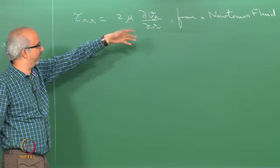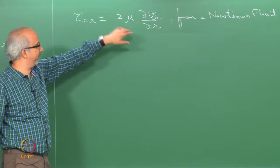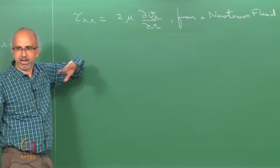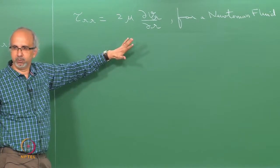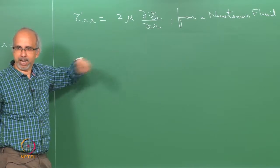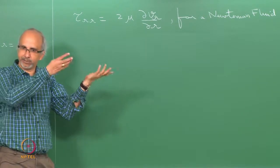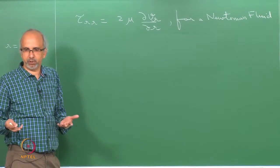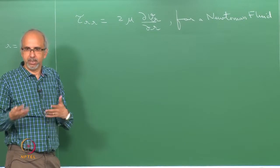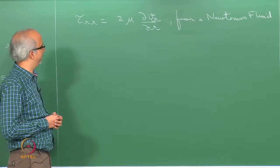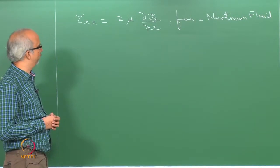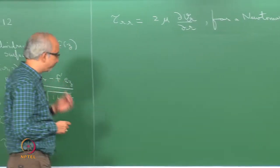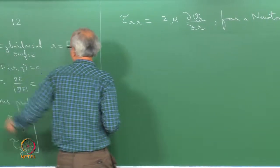If you have a different rheological property, this particular relationship will change. The idea is that everything is now in terms of velocity — the differential equation has velocity, the boundary condition will also be in the form of velocity, so everything is consistent. Now I want to evaluate n·T·n.